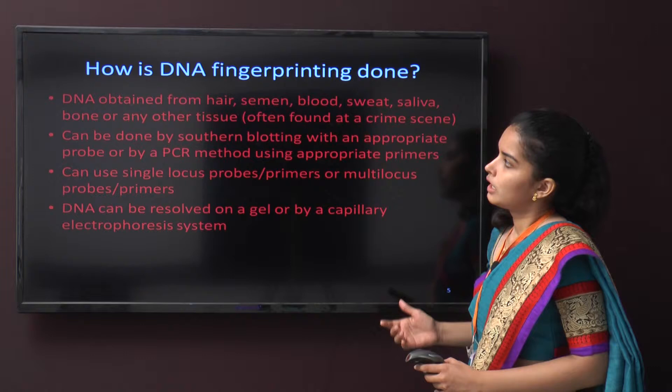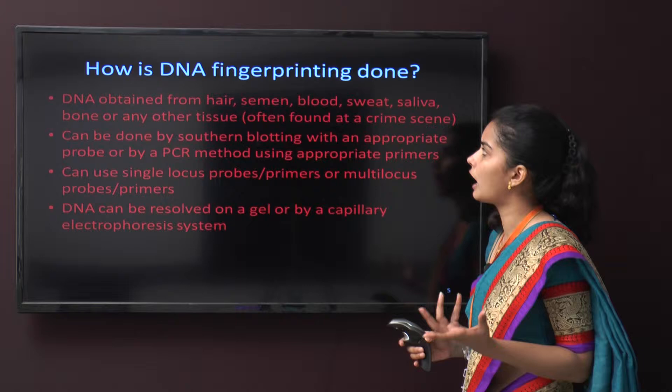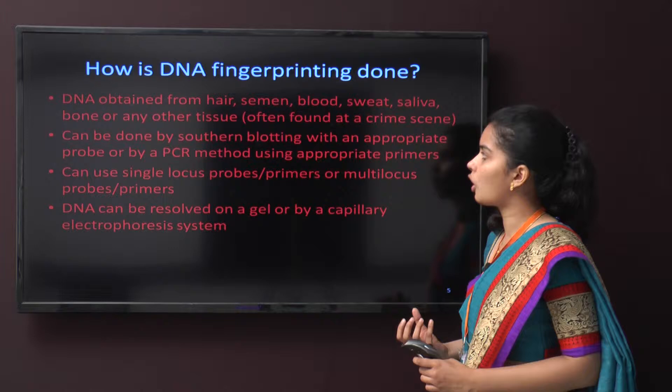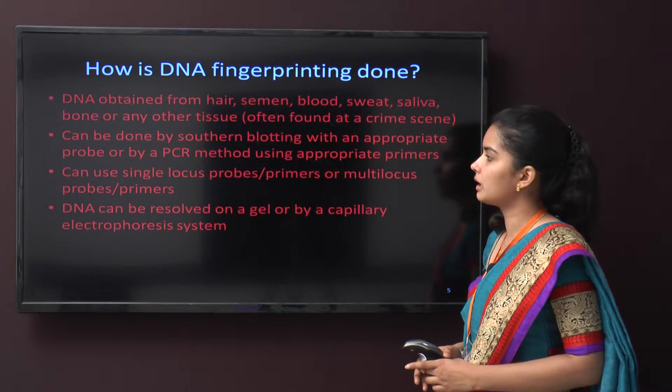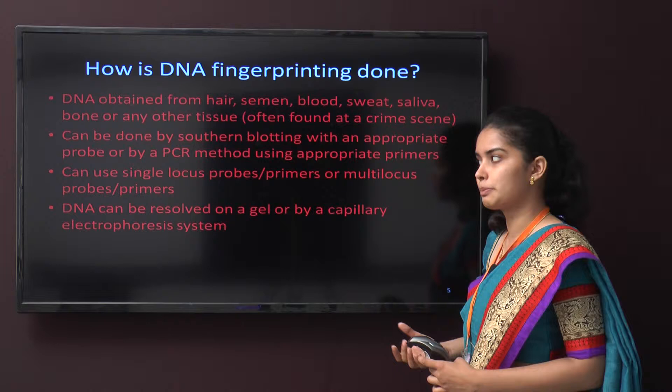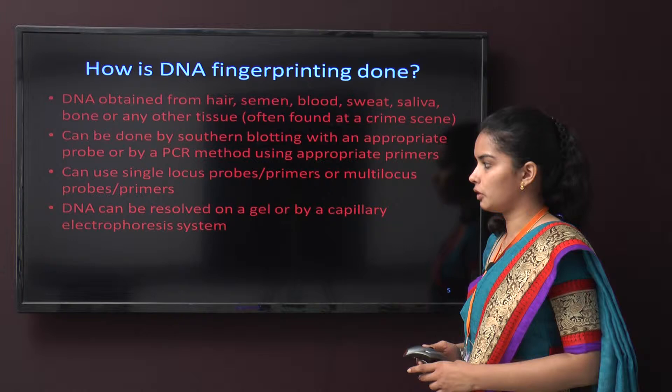How is DNA fingerprinting done? DNA is obtained from hair, semen, blood, sweat, saliva, bone, or any other tissue. It can be done by Southern blotting with an appropriate probe, or by PCR using appropriate primers. Probes and primers can be single-locus or multi-locus. DNA is then resolved on a gel by capillary electrophoresis.